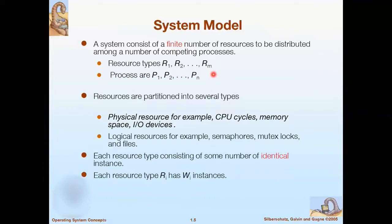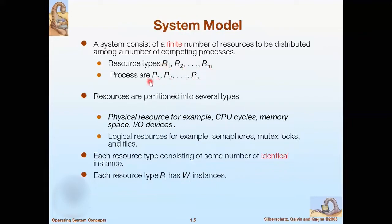The physical resources include CPU cycles, memory space, and I/O devices, while the logical resources include semaphores, mutex locks, and files. Each resource type consists of some number of identical instances, or particular objects. Each resource type Ri has Wi instances. To summarize: resources are represented by the R symbol, processes by the P symbol, and instances by the W symbol.